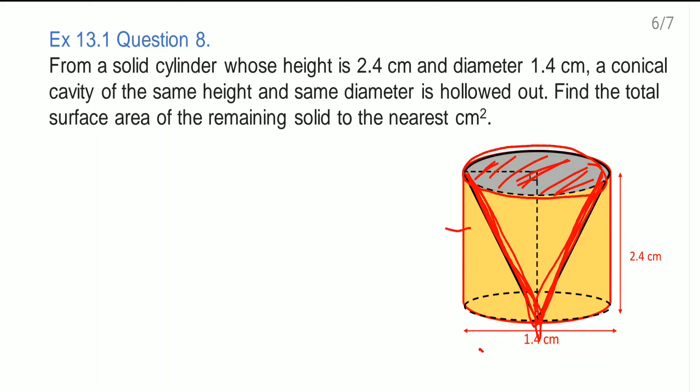So let us write it down. Here they have given you diameter of the cylinder which is 1.4 cm. So I will write d = 1.4 cm, so radius r = 0.7 cm, and height h = 2.4 cm. This is about the cylinder. Height and radius of the cylinder and the cone is same. Already they said.